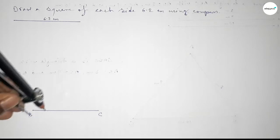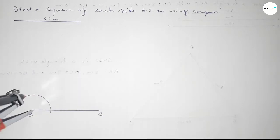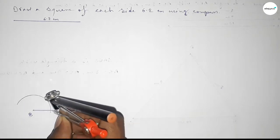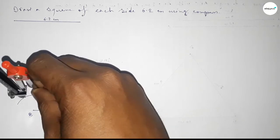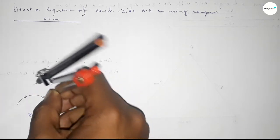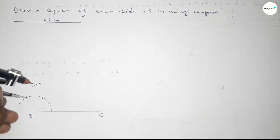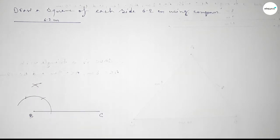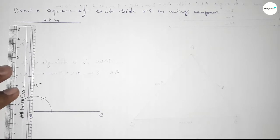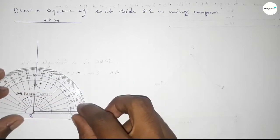Now we have to draw a 90-degree angle at point B. Putting the compass on point B and drawing an arc, then putting the compass here and cutting here, and putting the compass here and cutting here. Drawing an arc again with the same length, then both curves intersect at a point. Joining this line to get a 90-degree angle.